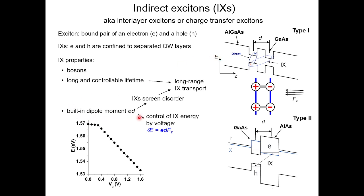Another important property is that indirect excitons are oriented dipoles — all electrons are in one quantum well and all holes in the other — meaning they're all oriented in the same direction. This means two excitons will repel each other: when they get close, like charges repel. While opposite charges attract and hold each exciton in a bound state, when two excitons approach each other, the like charges repel and the excitons push apart.